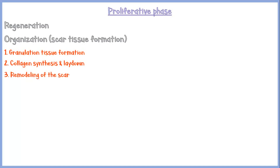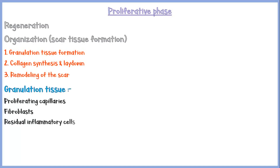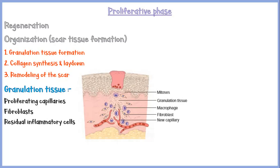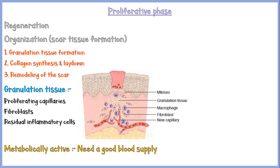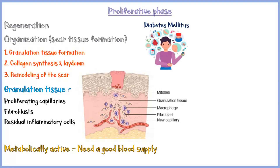Granulation tissue is composed of proliferating capillaries, fibroblasts, and residual inflammatory cells like macrophages. It is metabolically active with formation of new blood vessels and proliferation of fibroblasts, and therefore needs a good blood supply. In conditions where the blood supply is impaired, like in diabetes mellitus, formation of granulation tissue is defective, resulting in a delay in the healing process.